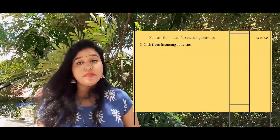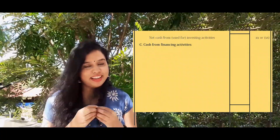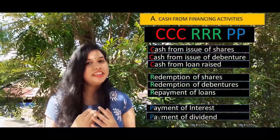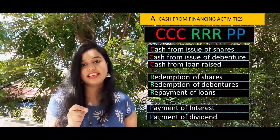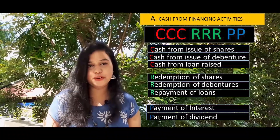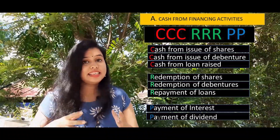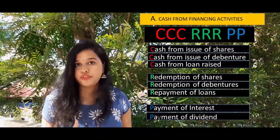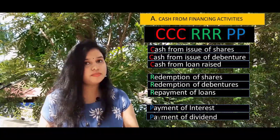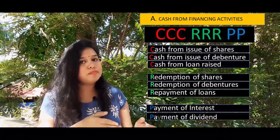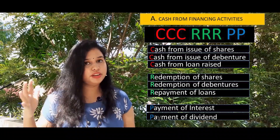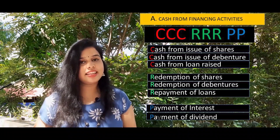Part C is cash flow from financing activities. The code is CCC, RRR, PP. CCC is cash from issue of shares, issue of debentures, and loan raised. RRR is redemption of shares, redemption of debentures, and repayment of loans. PP — first P is payment of interest and second P is payment of dividends.